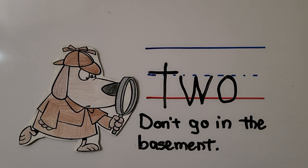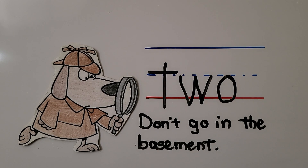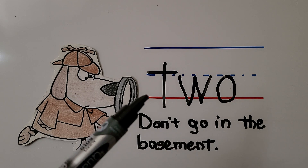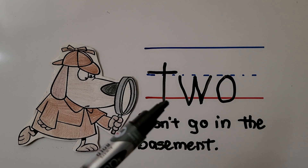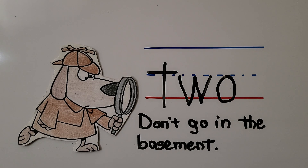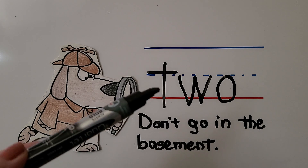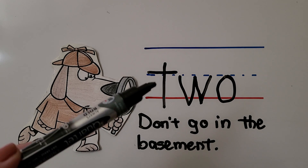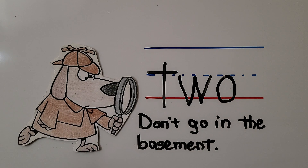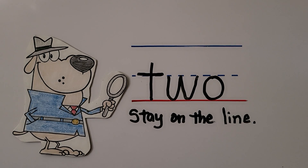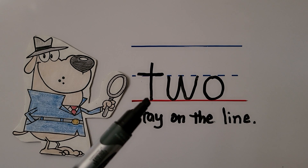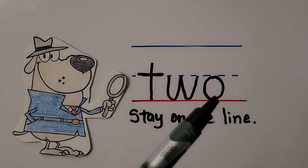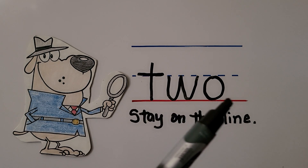When you're writing your numbers and letters, you don't want to go in the basement below this line. This is wrong — they went too far past the line. Don't go down into the basement. Stay on the first floor on this line. This is the correct way — we stay on the line and stop at the line.